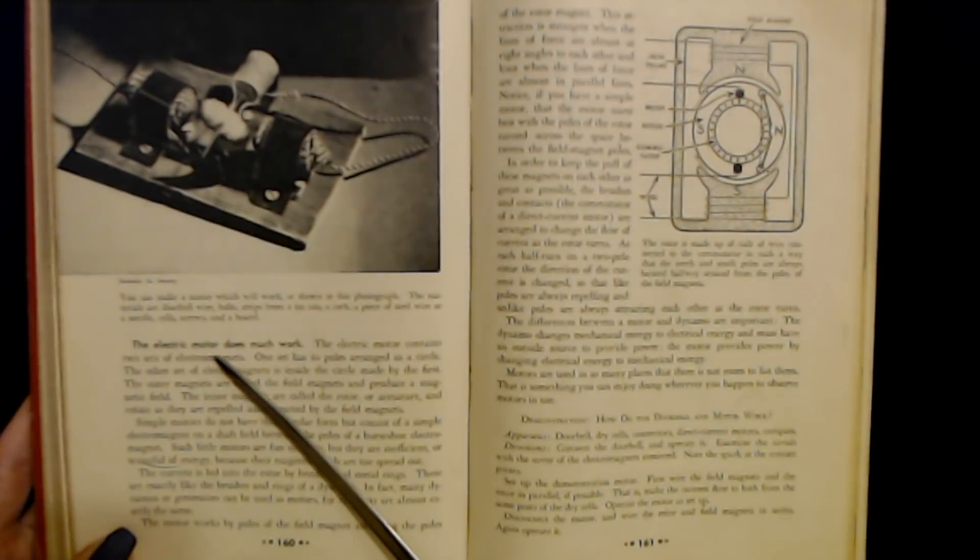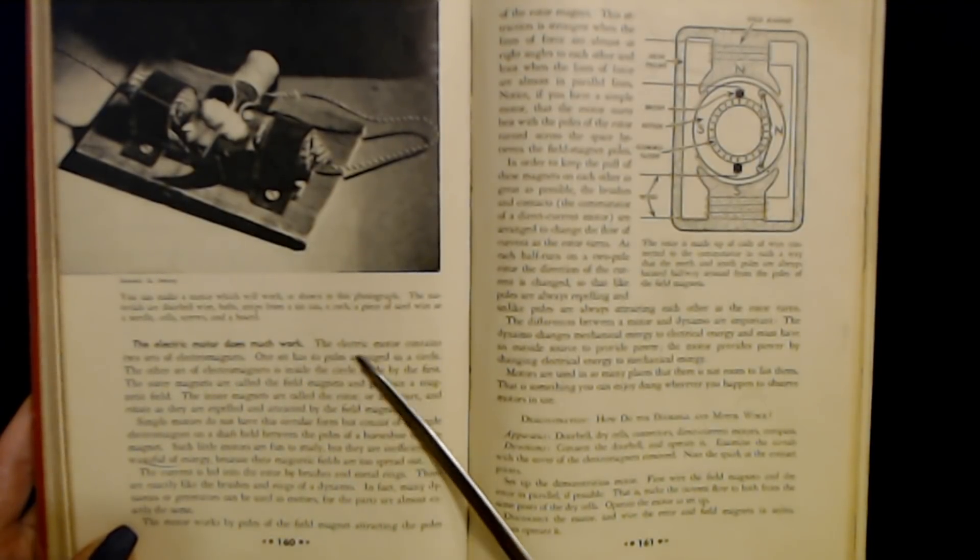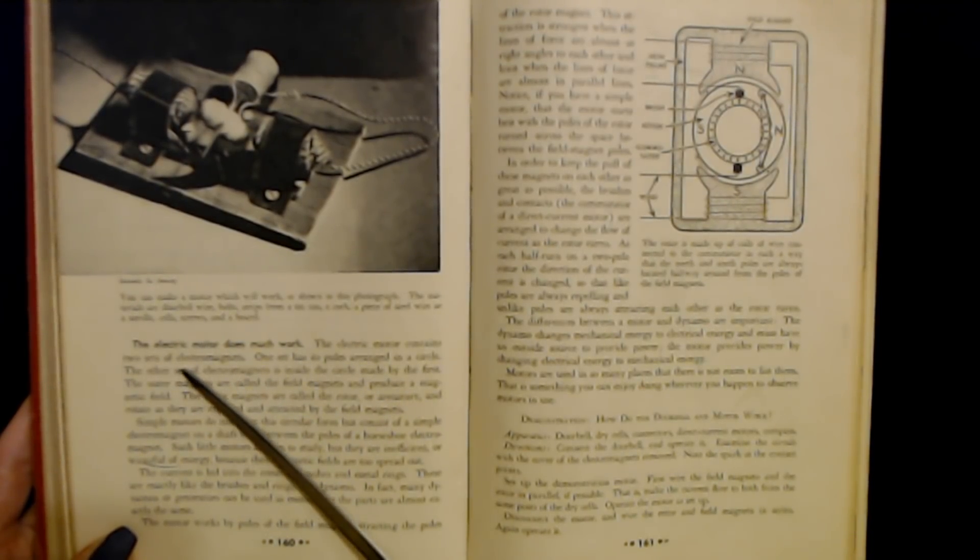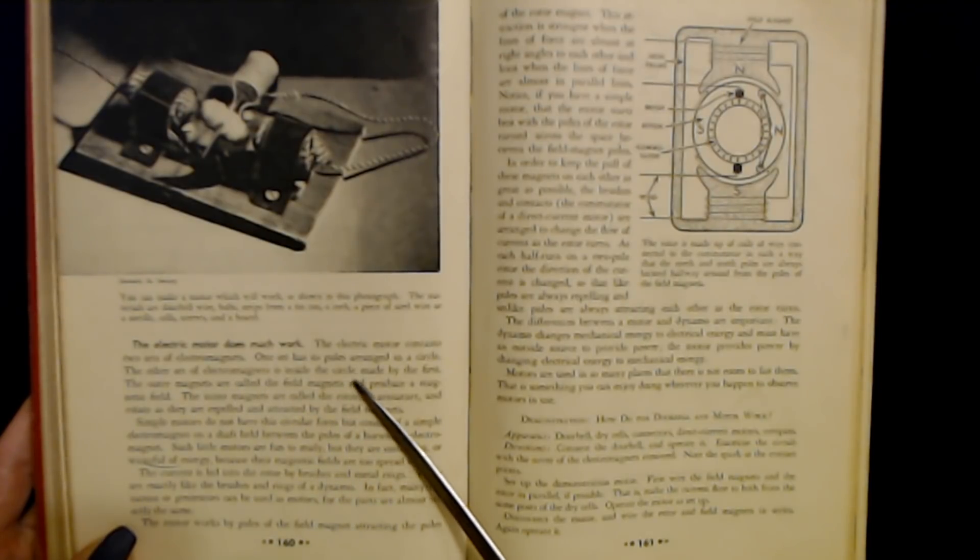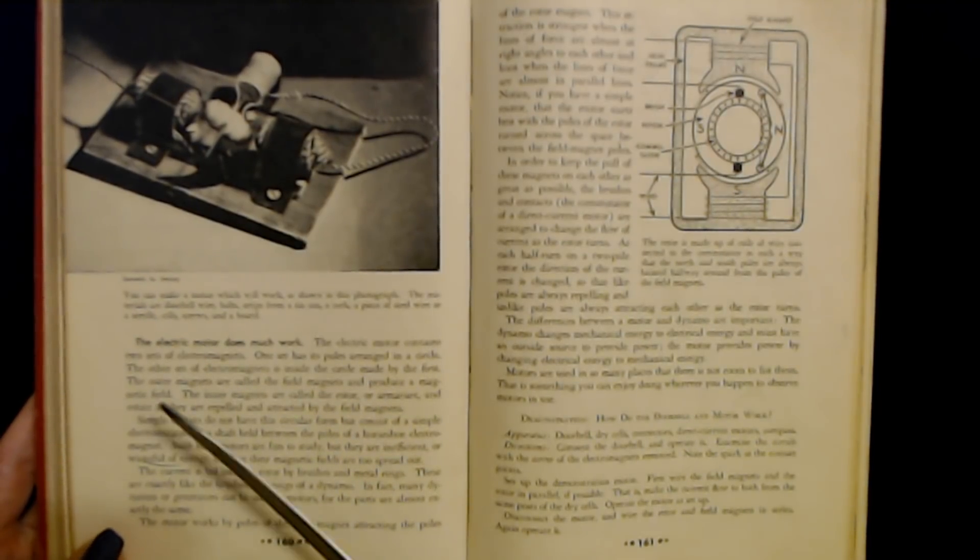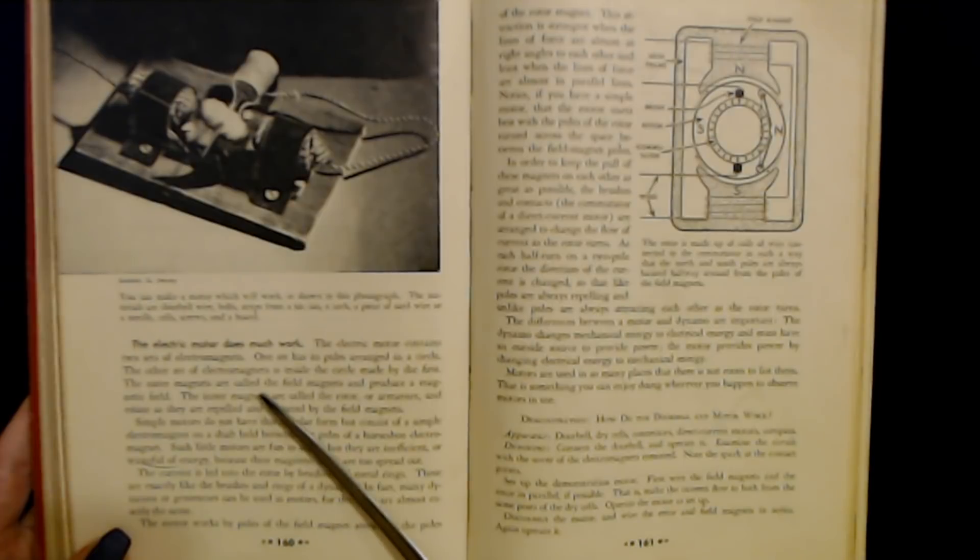The electric motor does much work. The electric motor contains two sets of electromagnets. One set has its poles arranged in a circle and the other set of electromagnets is inside the circle made by the first. The outer magnets are called the field magnets and produce a magnetic field. The inner magnets are called the rotor or armature and they rotate as they are repelled and attracted by the field magnets.